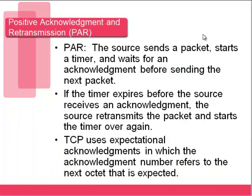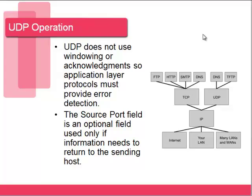TCP uses PAR — Positive Acknowledgement and Retransmission — to guarantee data delivery. When we send data, we start a timer and wait for the Expectational Acknowledgement back. If we send packets 1 through 3, we wait for that acknowledgement. If we never get one, we know those segments never made it to the destination, and we resend the data. If the timer expires before the source receives an acknowledgement, we simply retransmit. UDP, by contrast, does not use any windows, acknowledgements, or any of these mechanisms — it just sends the data, hopes it gets there, with no guaranteed delivery. It's just best effort.